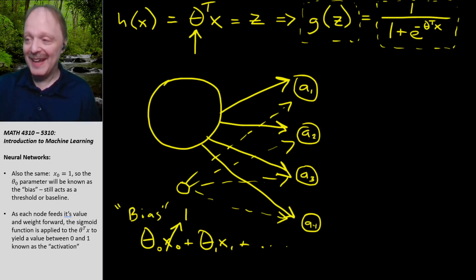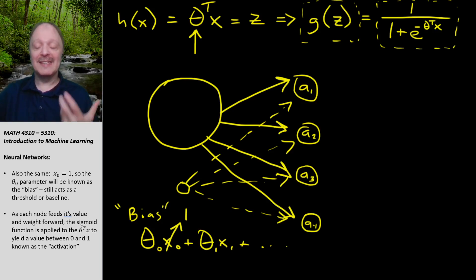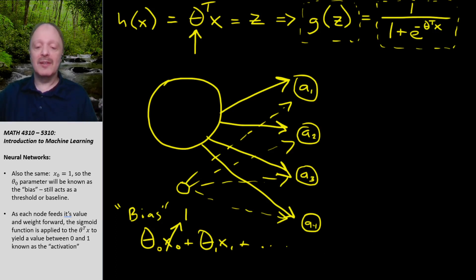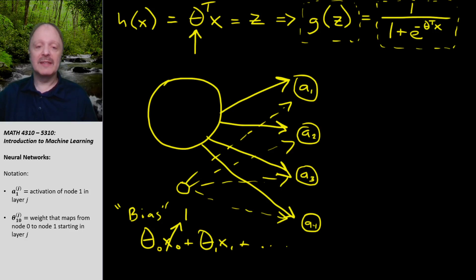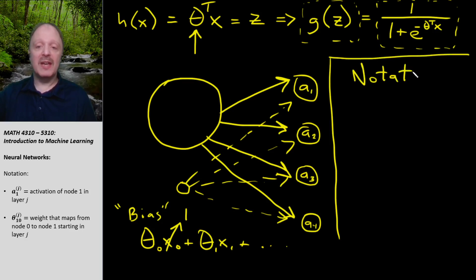We've got enough to think about the basics now. But since this is such a complicated structure, we're going to need some new notation to be able to talk about which node we're referencing and which theta we're referencing — all of that has to be very precise. Let's talk about this notation. It's very foreign at the beginning, but you have to have it. You cannot reference things within a neural network without precise notation.